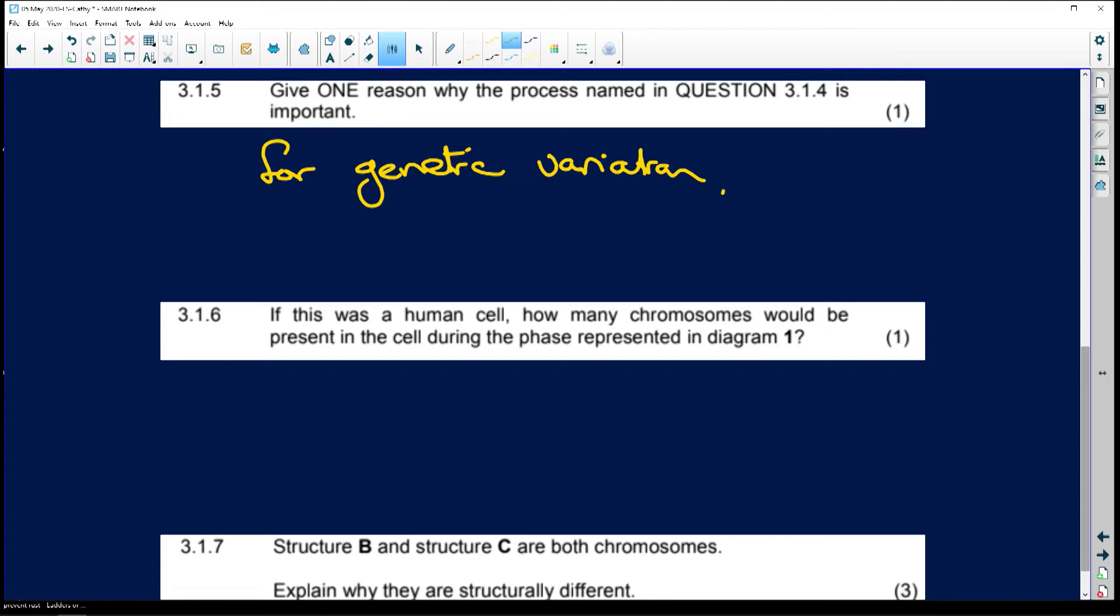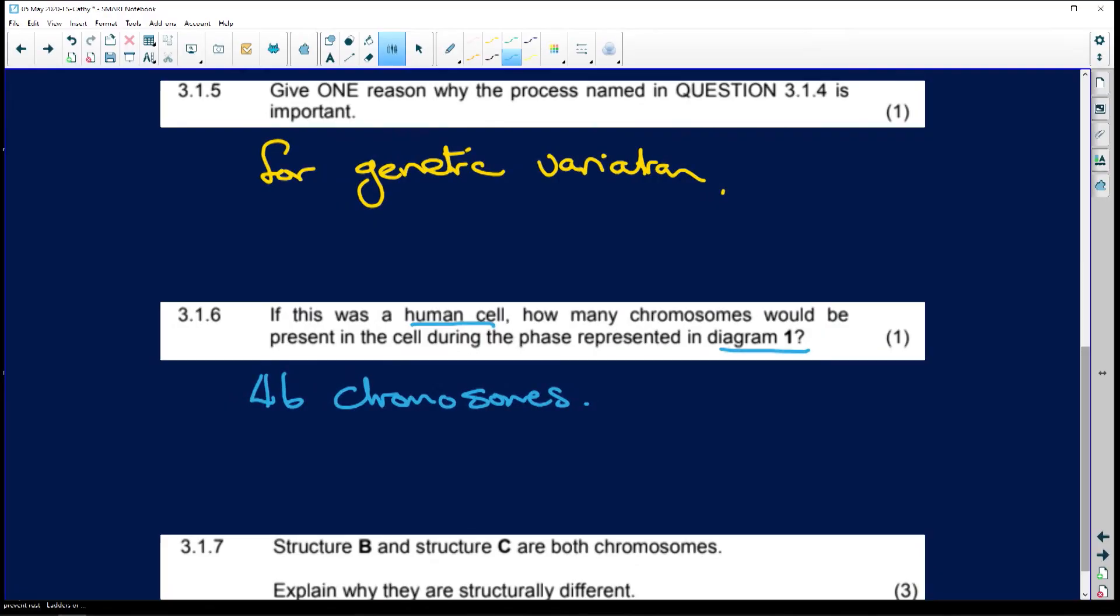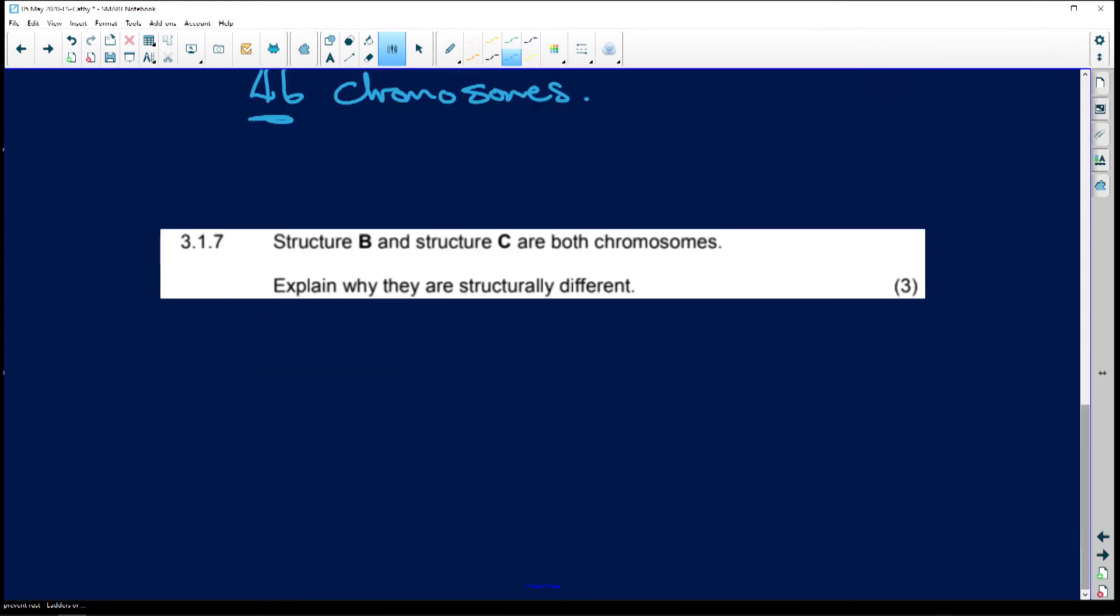If this was a human cell, how many chromosomes would be present in the cell during the phase represented in diagram one? Diagram one is anaphase one. And during meiosis one or anaphase one, it is going to be 46 chromosomes. So during meiosis one, during prophase, still 46 chromosomes. During metaphase, still 46 chromosomes. But that's when karyokinesis occurs, which is the splitting of the nucleus. So directly after metaphase, even early anaphase, when the spindle fibers start to pull the chromosomes into opposite poles, that is when karyokinesis has occurred and we're now sitting with 23 chromosomes in each cell. But up until then, it is 46 chromosomes.